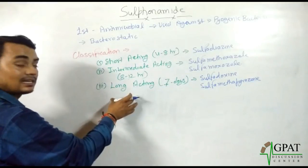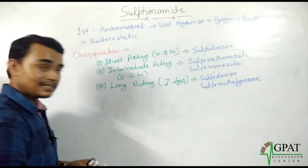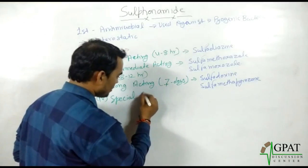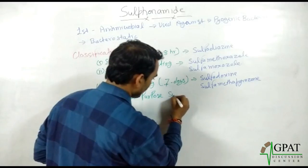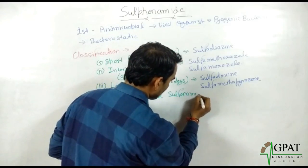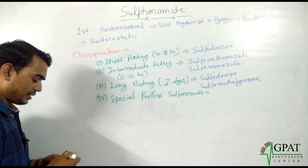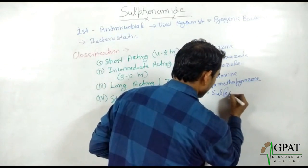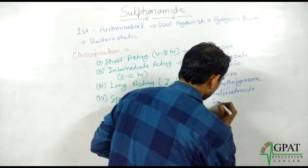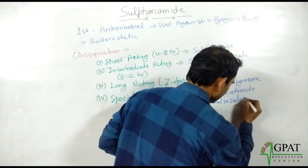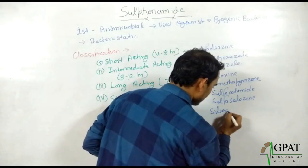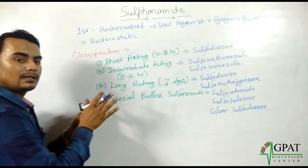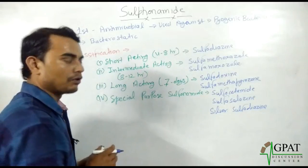These three classes are based on their half-life. The fourth class is known as special purpose sulfonamides. These drugs are used in special conditions, and the drug names are sulfasalazine and silver sulfadiazine.